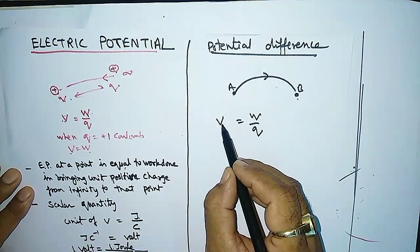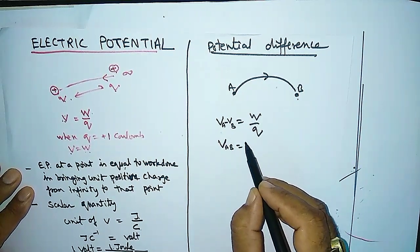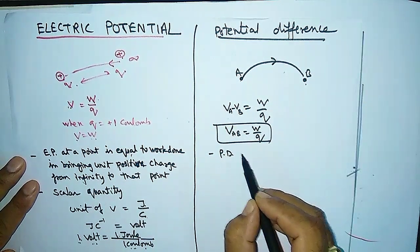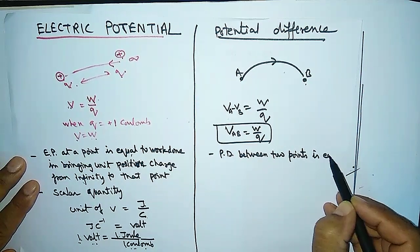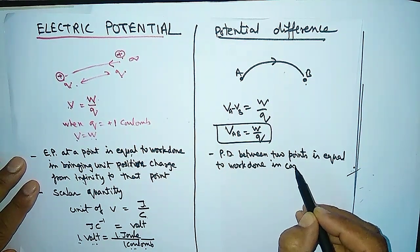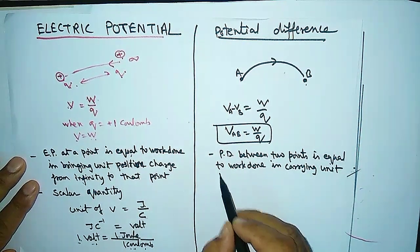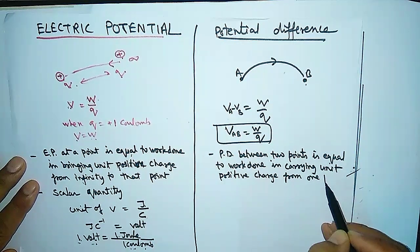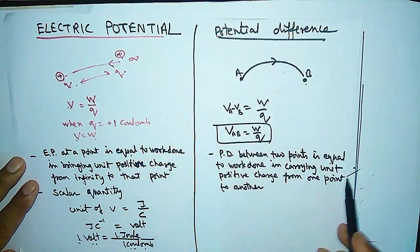Suppose we have point A and point B. We can write the potential difference as V_A minus V_B, or sometimes written as V_AB. The potential difference between two points is equal to the work done in carrying a unit positive charge — where Q equals plus 1 — from one point to another.